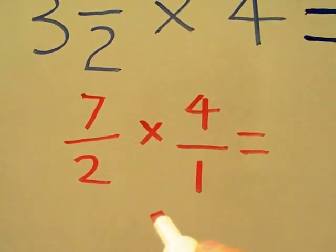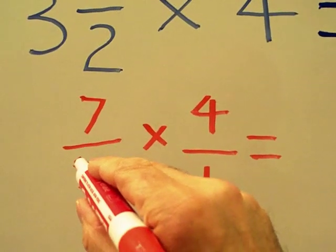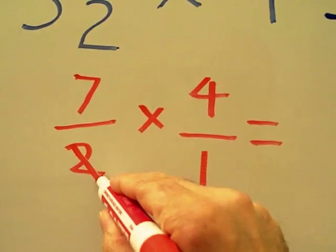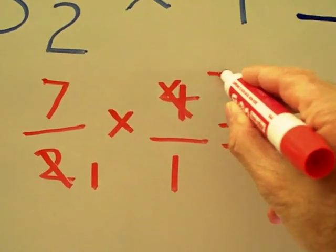In this case, the 2 and the 4 could be cross-canceled because 2 is a factor of 4. So, 2 goes into itself once. 2 goes into 4 twice.